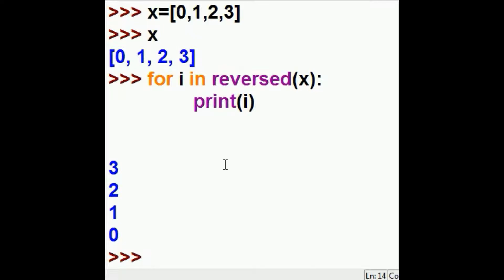3, 2, 1, 0. But this reversed doesn't actually give me a list. It just allows me to iterate through the reversal of this list, X.